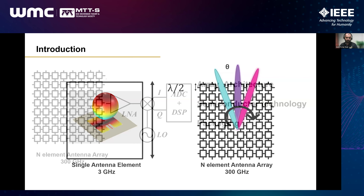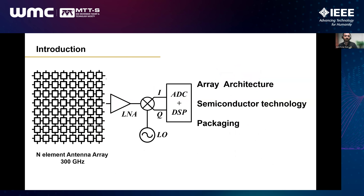From FR2 millimeter wave to sub-terahertz, we can't live without the phased array. This talk is mainly about how we implement so many antennas, how we excite them, and the role of electronics in doing so. Electronics consists of the RF front end, baseband, ADCs, signal generation — it's a very big topic. I will focus mostly on the front-end side and discuss what technology we should use when considering a certain array architecture.